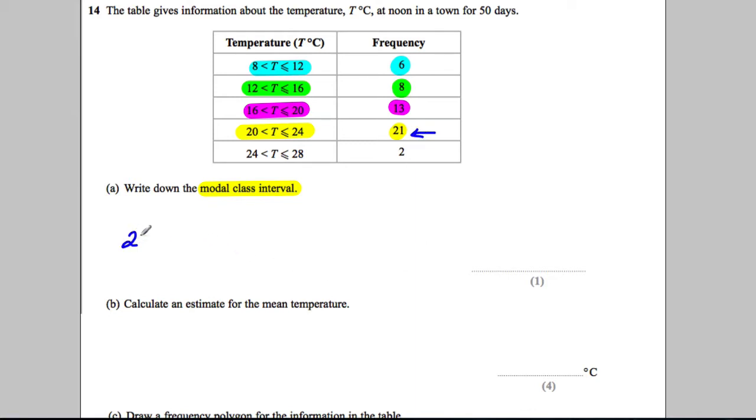Now be careful not to write down 21. Do not write down 21. 21 is the number of times this one came up. We're asked for the modal class interval so we should say 20 ≤ T ≤ 24.